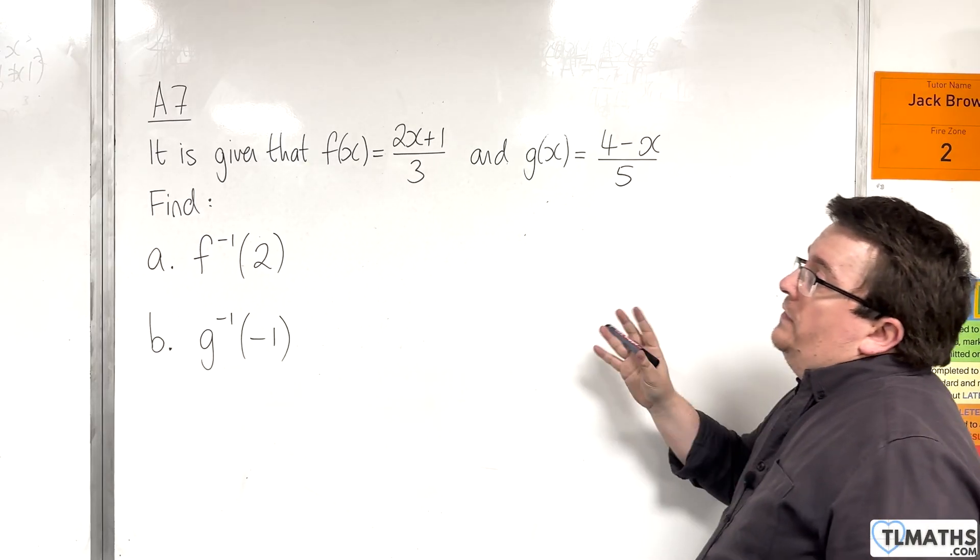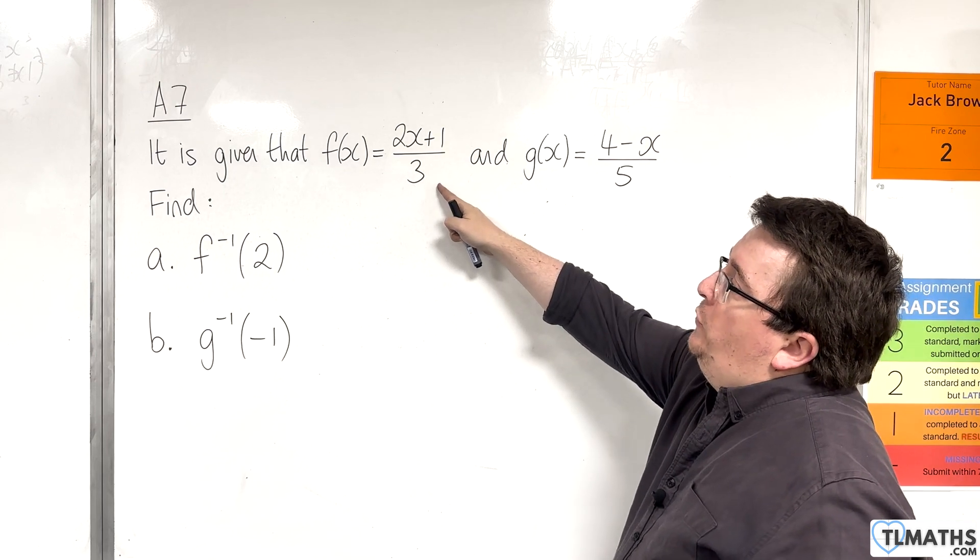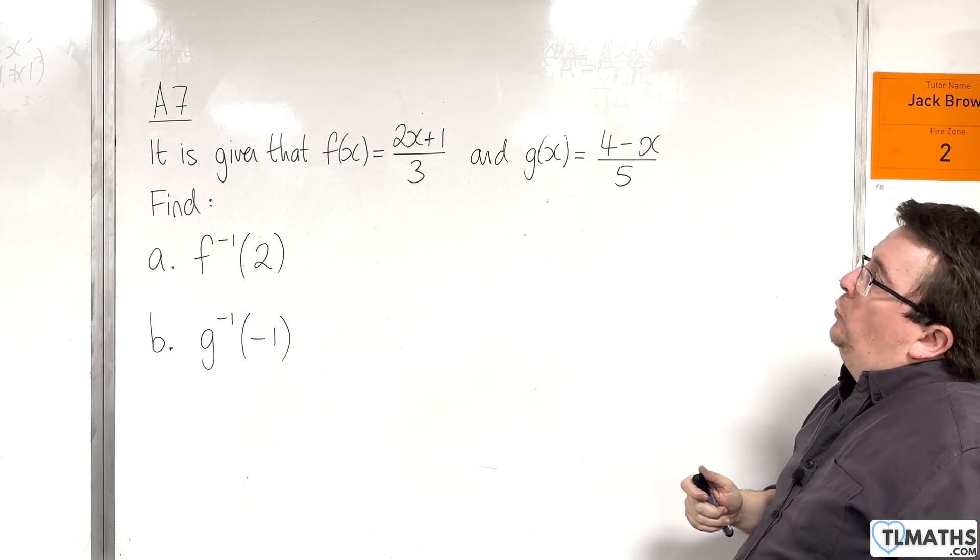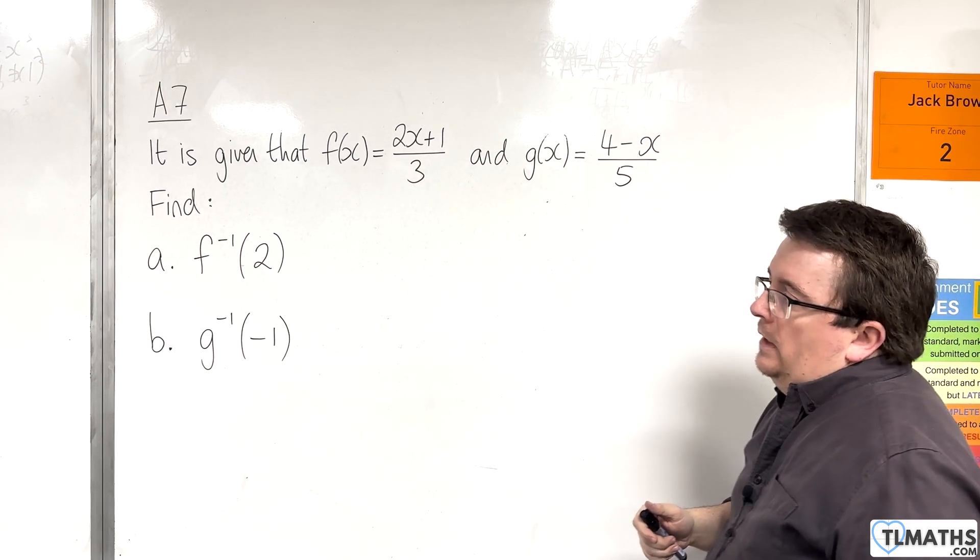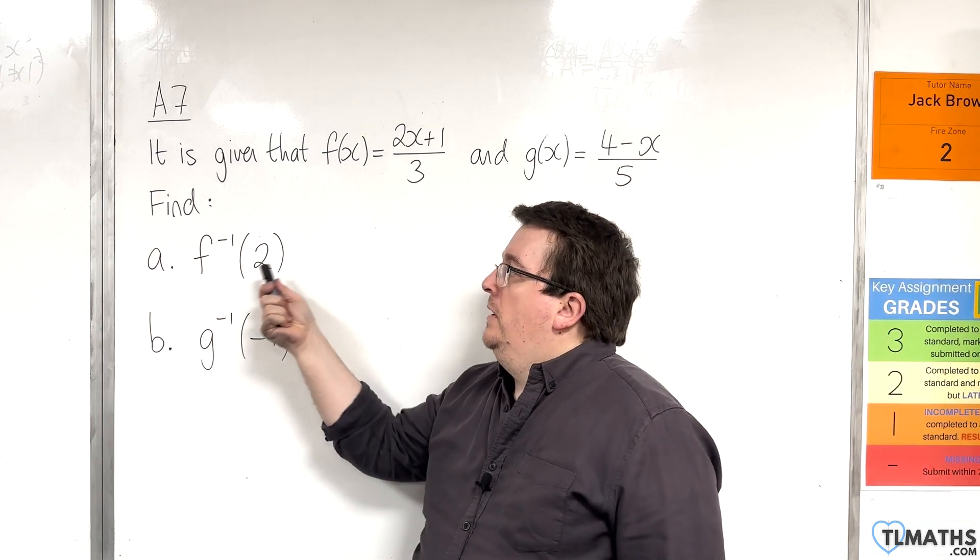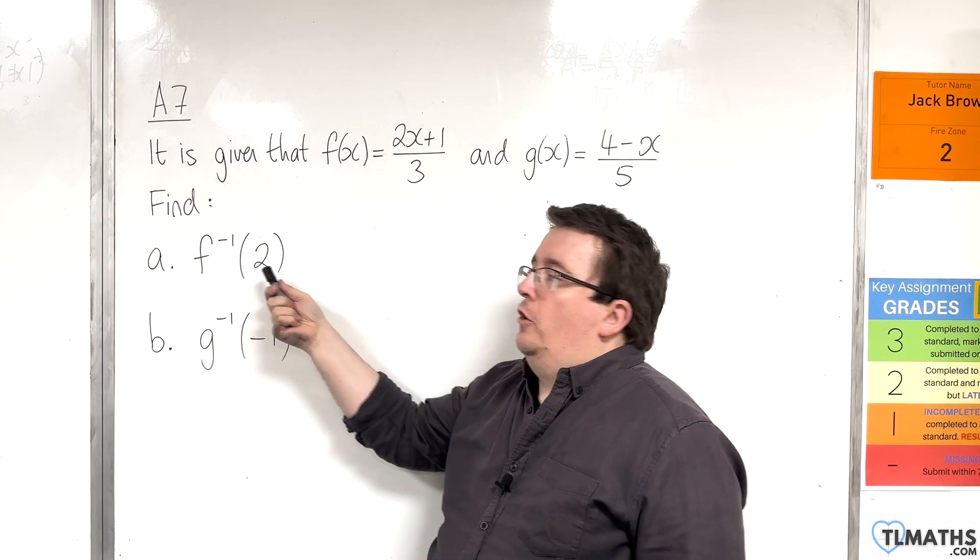So, in this video, we are given that f of x is 2x plus 1 over 3, and g of x is 4 take away x over 5. We need to find, first of all, f inverse of 2.